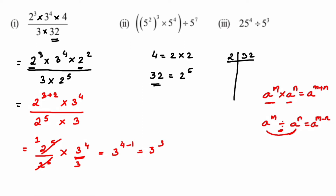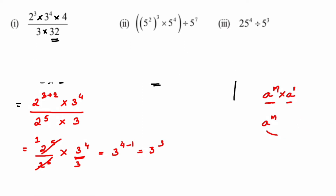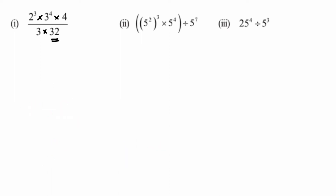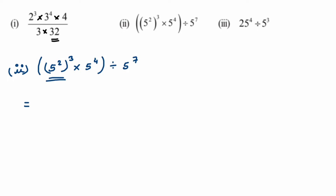Second question: we have (5 squared) to the power 3, multiplied by 5 to the power 4, all in big brackets, then divided by 5 to the power 7. Whenever brackets are given, solve them first. For a power on power, multiply the powers — it's like a to the power m, again to the power n, equals a to the power m into n. So 2 threes are 6, giving 5 to the power 6.